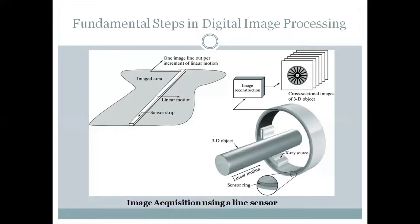We will cover the line sensor. Previously we discussed image acquisition using a single sensor and the two-dimensional image. We can tell the image sensor in size — it will capture the image. If we capture it with a two-dimensional image, we can use it with single image sensors.